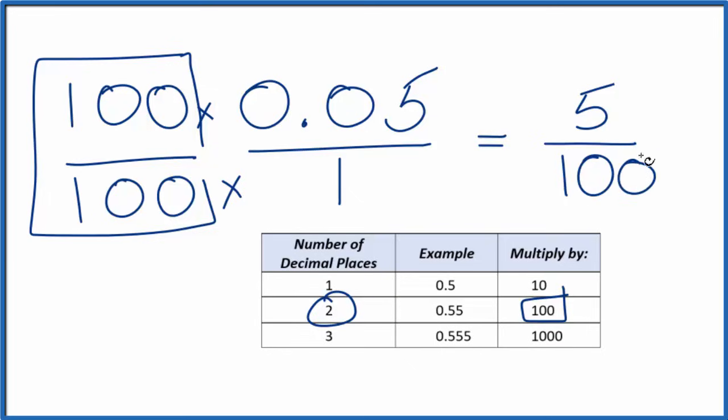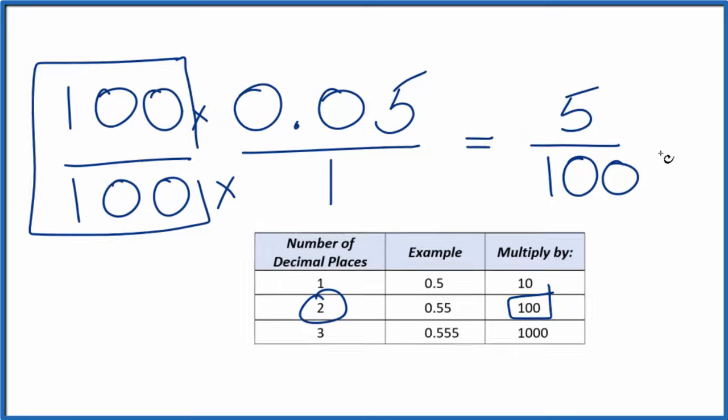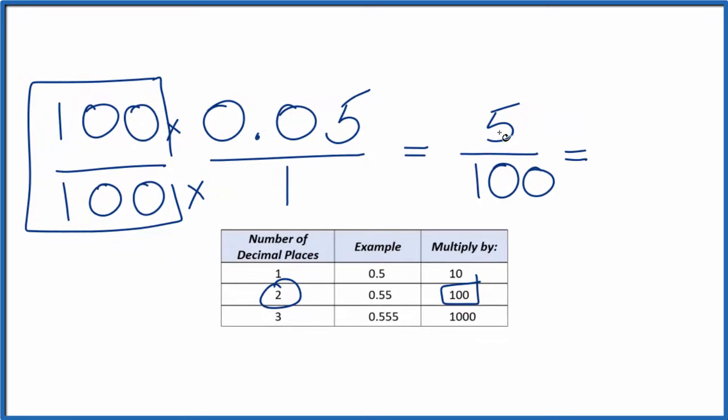And we end up with this fraction, 5 over 100. We can reduce this a little bit further. So if we simplify it, 5 goes into 1 just once. 5 goes into 100 twenty times. So we end up with this simplified fraction, 1 twentieth.